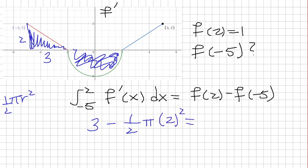So this is equal to f of 2, which is 1, minus f of negative 5. Now, 2 squared over 2 is just 2. So we have 3 minus 2 pi is equal to 1 minus f of negative 5. We're going to subtract 1 from both sides. We have 2 minus 2 pi is equal to negative f of negative 5.